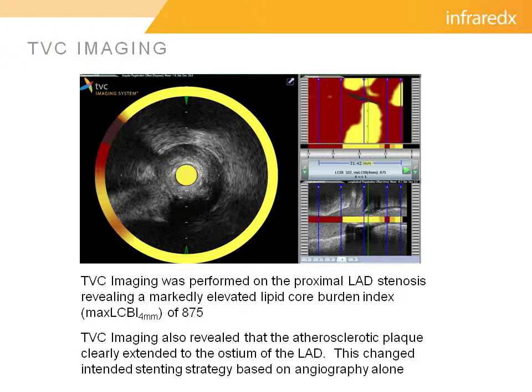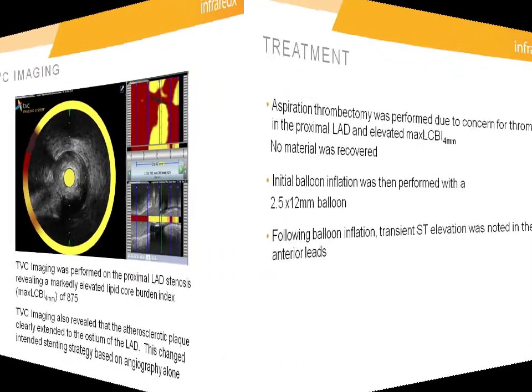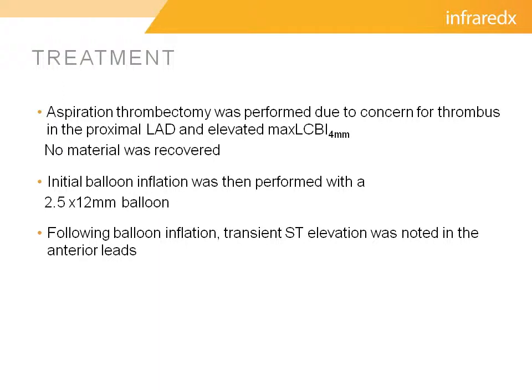Therefore, we decided to change our stent strategy to a slightly longer stent to place it closer to the ostium of the LAD. There was also concern of a thrombus burden angiographically, and this was confirmed by the high lipid core burden index. So therefore, we did perform aspiration thrombectomy. However, we did not have return of any significant amount of material, and we proceeded with an initial balloon inflation with an undersized balloon, which was 2.5 by 12 millimeters.